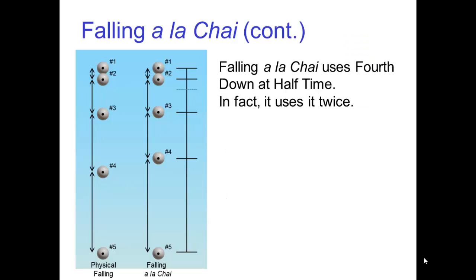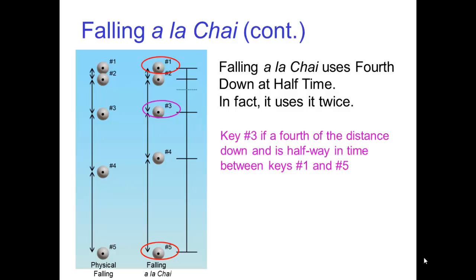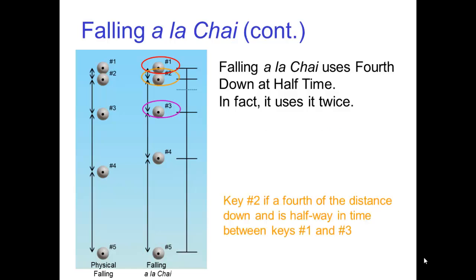Now, falling a la chai uses fourth down at half-time. In fact, it uses it twice. Key number three is a fourth of the distance down and is halfway in time between keys number one and number five. Key number two is a fourth of the distance down and is halfway in time between keys number one and number three.